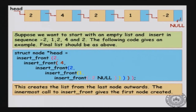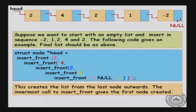You can call this function multiple times. Suppose you start with an empty list and insert -2, then -1, then 2, then 4, then 2. You can call these functions one after the other. For example: struct node head = insert_front(2, insert_front(4, insert_front(2, insert_front(1, insert_front(-2, null))))). Once you have the function to insert at the beginning, you can use it multiple times to build up the list.